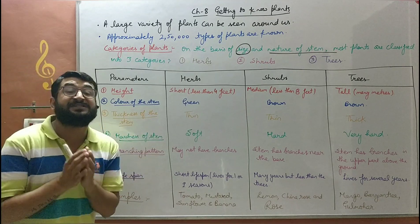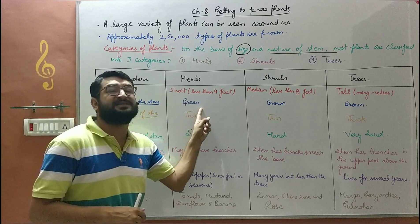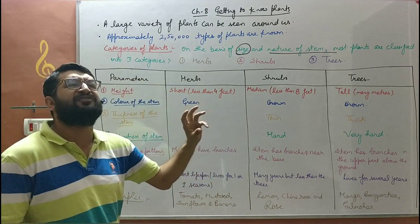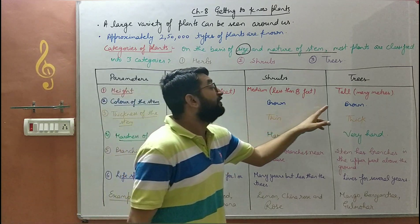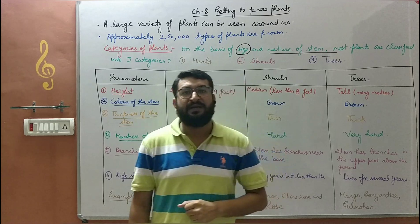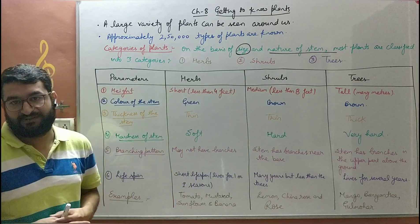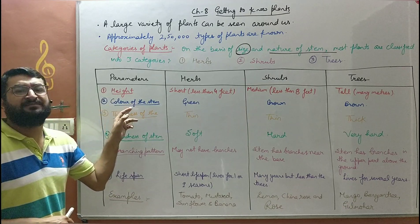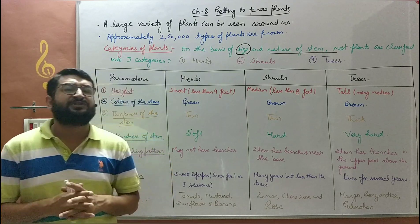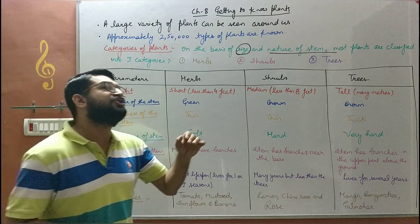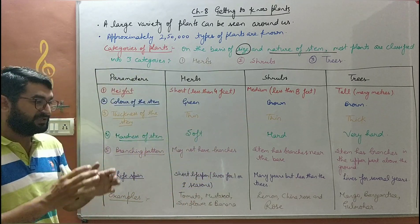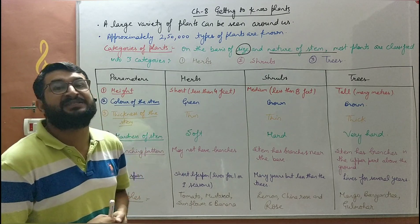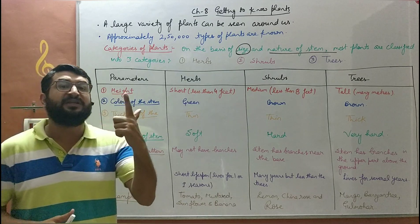The next parameter is color of the stem. Herbs have a green stem — the green stem is referred to as a shoot. Shrubs have a green-brown stem; some part may be green. Trees have a brown stem. That brown covering is actually bark — the dead tissue present on trees that covers them. A plant has three major parts: roots, leaves, and stem.